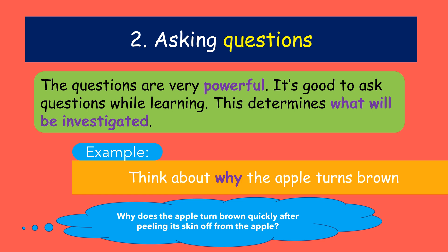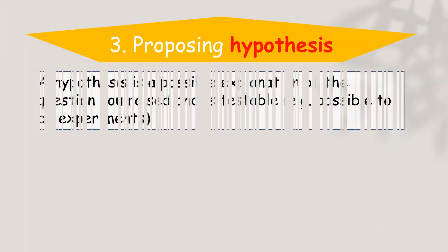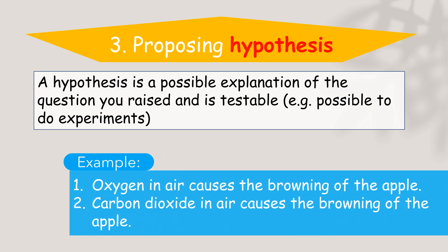Next step: proposing a hypothesis. A hypothesis is a possible explanation of the question you raised and is testable. For example, oxygen in air causes the browning of the apple can be a hypothesis. Carbon dioxide in air causes the browning of the apple can also be a hypothesis. These are just possible explanations to answer your question.